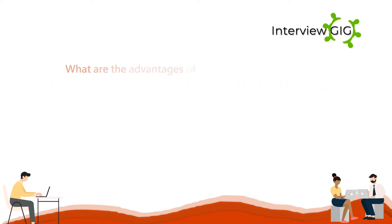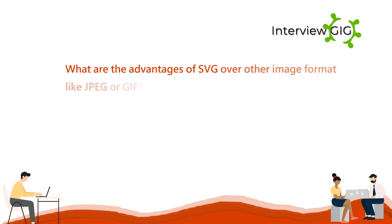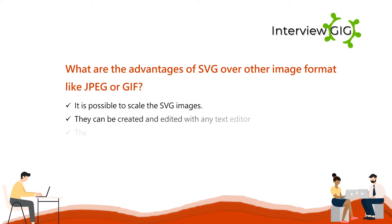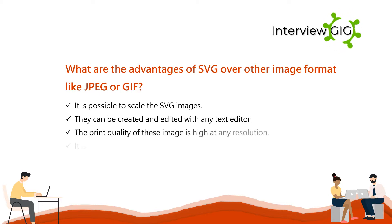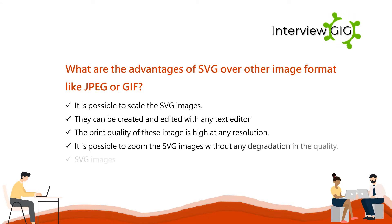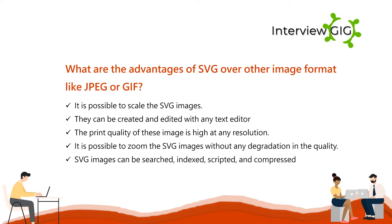What are the advantages of SVG over other image formats like JPEG or GIF? The main advantages of using SVG are: SVG images can be scaled; they can be created and edited with any text editor; their print quality is high at any resolution; SVG images can be zoomed without any degradation in quality; and SVG images can be searched, indexed, scripted, and compressed.